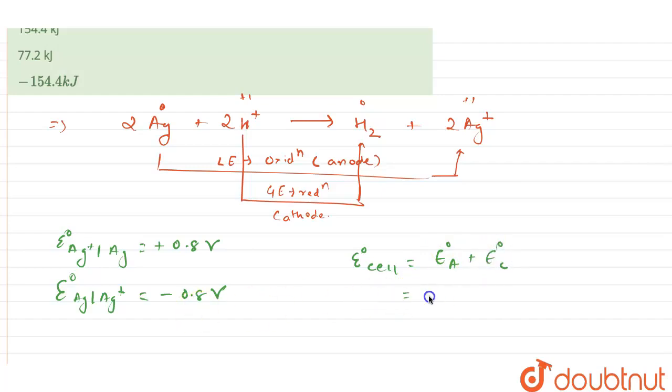At anode, silver is there. Therefore, -0.8 volt plus at cathode, hydrogen is there. Therefore, it will be written as 0. So in total, E° cell will come out to be -0.8 volt.